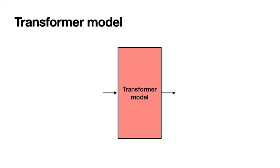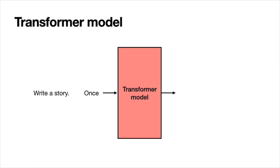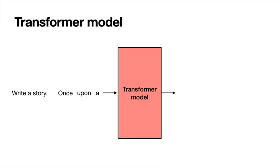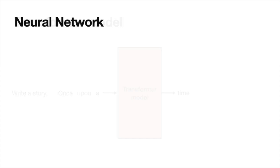But at the end of the day, all transformers do is find the next word. So if you input 'hello, how,' the transformer says 'are.' Now you can input more complicated things, like 'write a story.' The transformer won't come up with a whole story — it will only come up with the next word. The next word is 'once' because most stories start with that word. Then you input 'write a story once' and it says 'upon,' then 'write a story once upon' and it says 'a,' and you continue building the story one word at a time. That's how it creates those amazing stories that really sound like someone is talking to you.